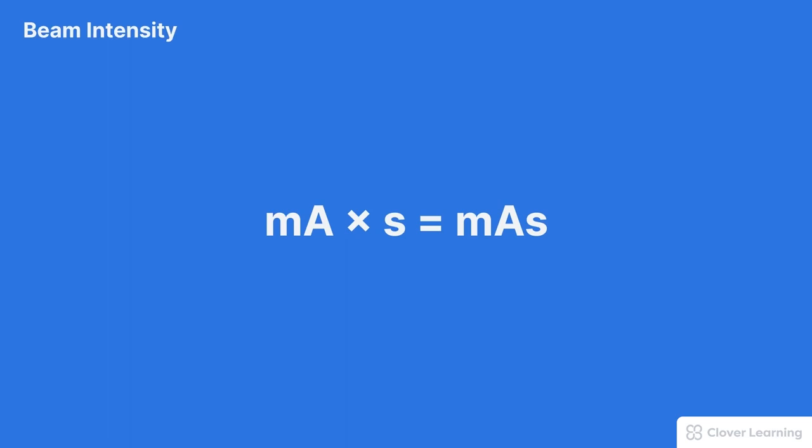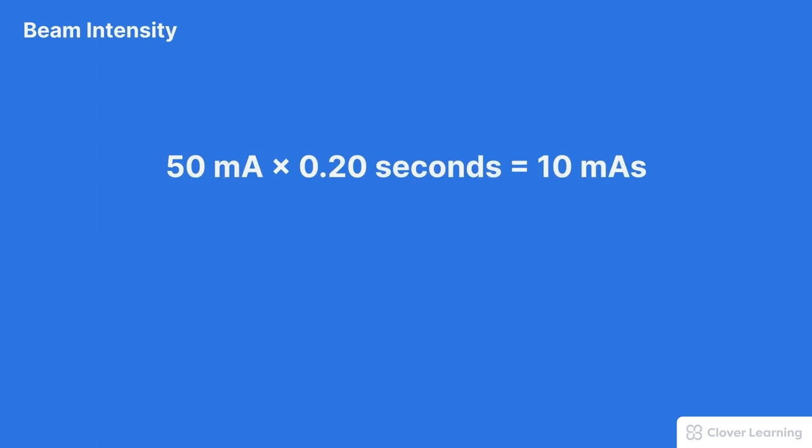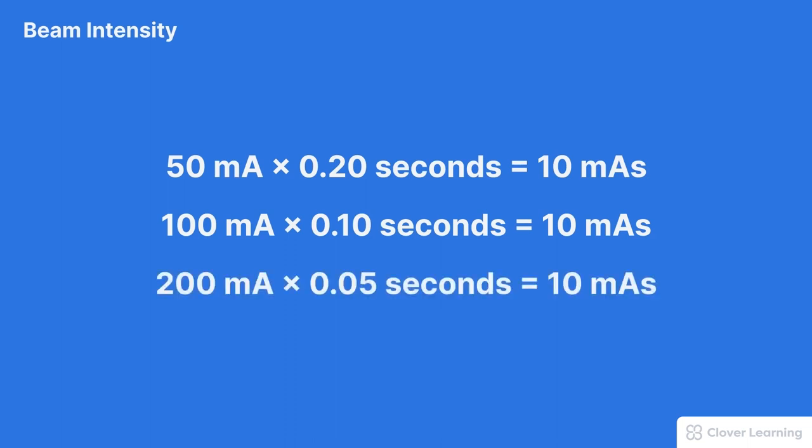There's a reciprocal relationship between MA and time. This means that multiple MA and exposure time settings result in the same total mAs and therefore the same total beam intensity. For example, 50 MA times 0.20 seconds equals 10 mAs. But 100 MA times 0.10 seconds also equals 10 mAs. And finally, 200 MA times 0.05 seconds still equals 10 mAs.